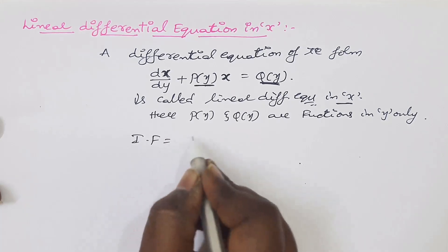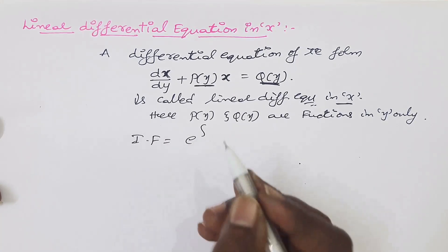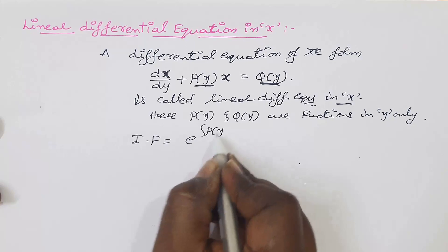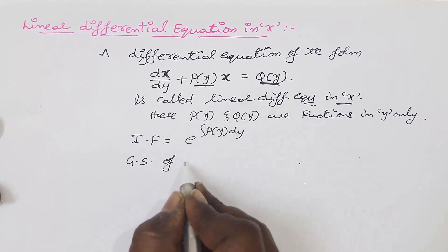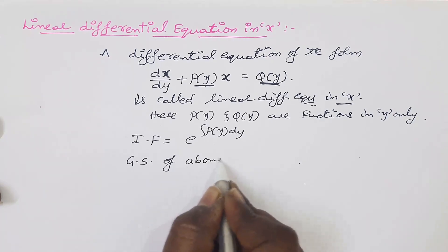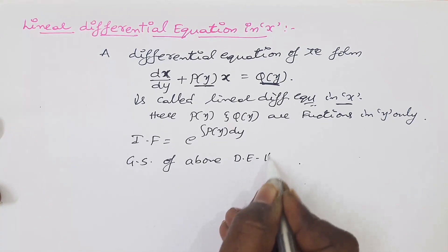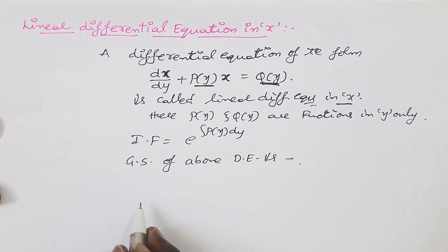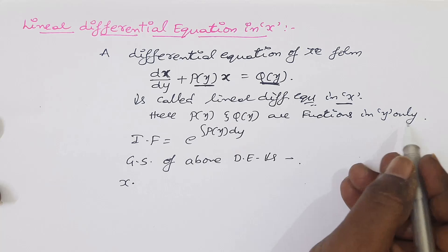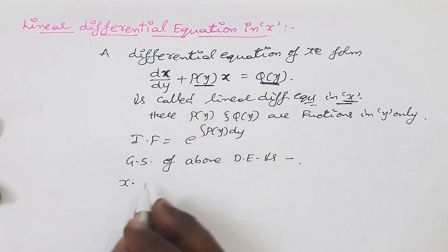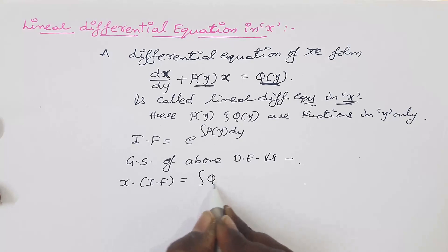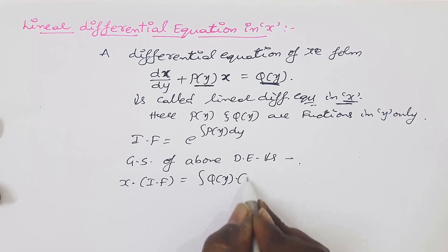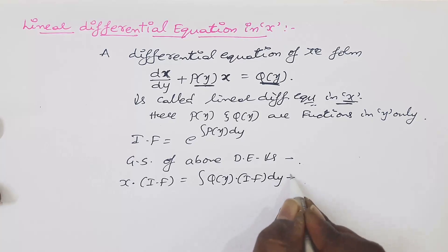The integrating factor is e to the power of the integral of P(y) dy. The general solution of this linear differential equation must be started with the dependent variable x. So: x times the integrating factor equals the integral of Q(y) times the integrating factor dy, plus c.